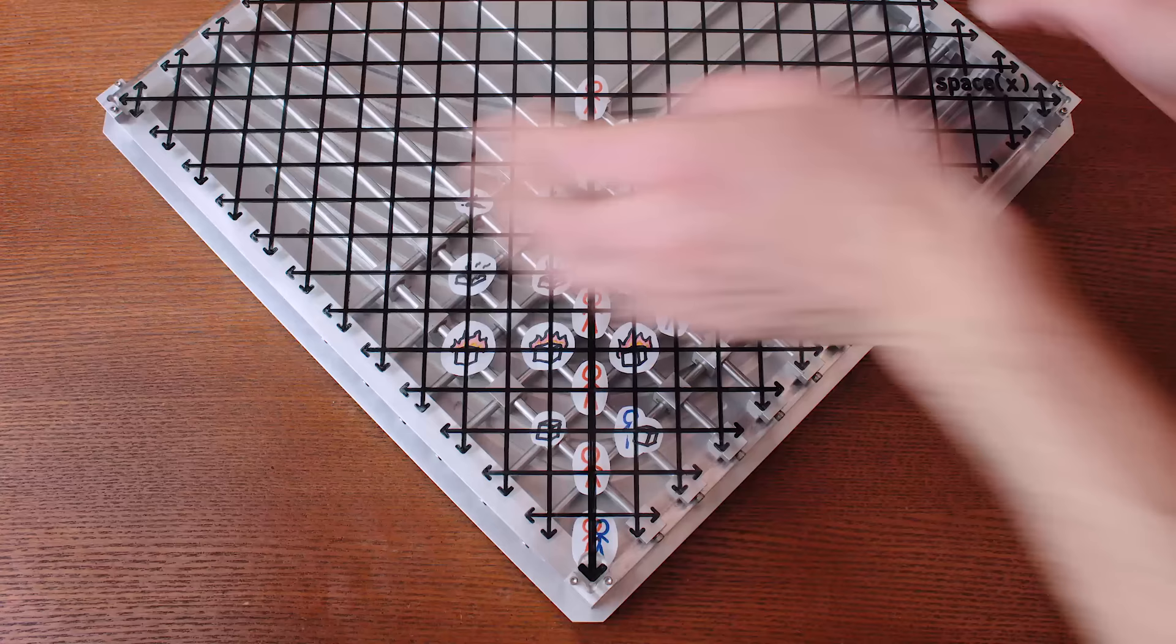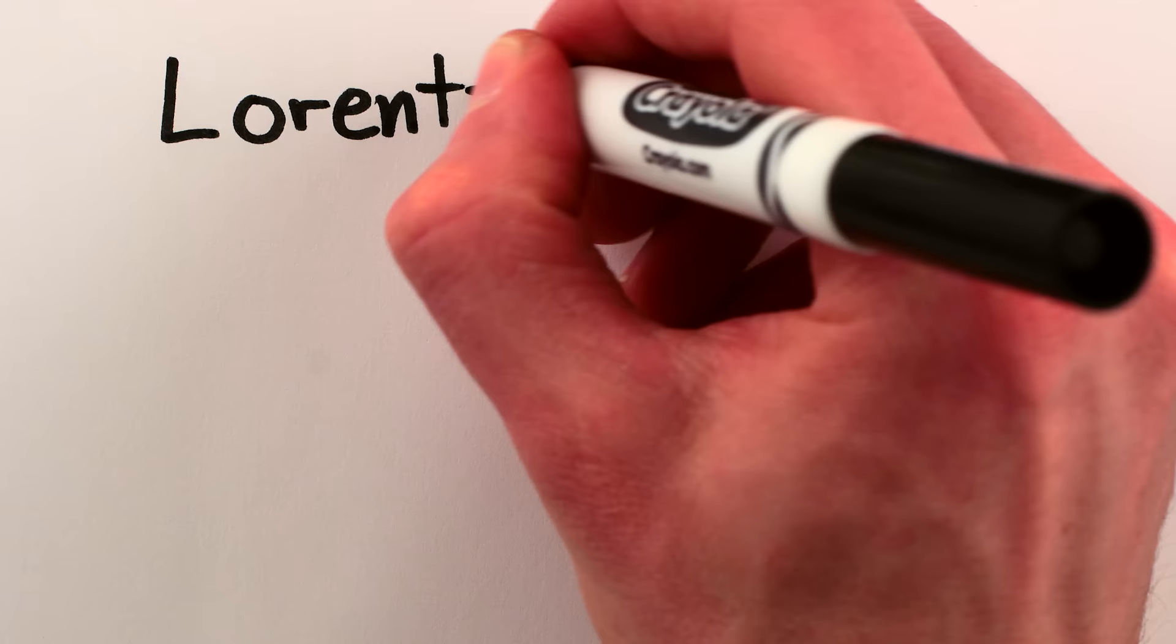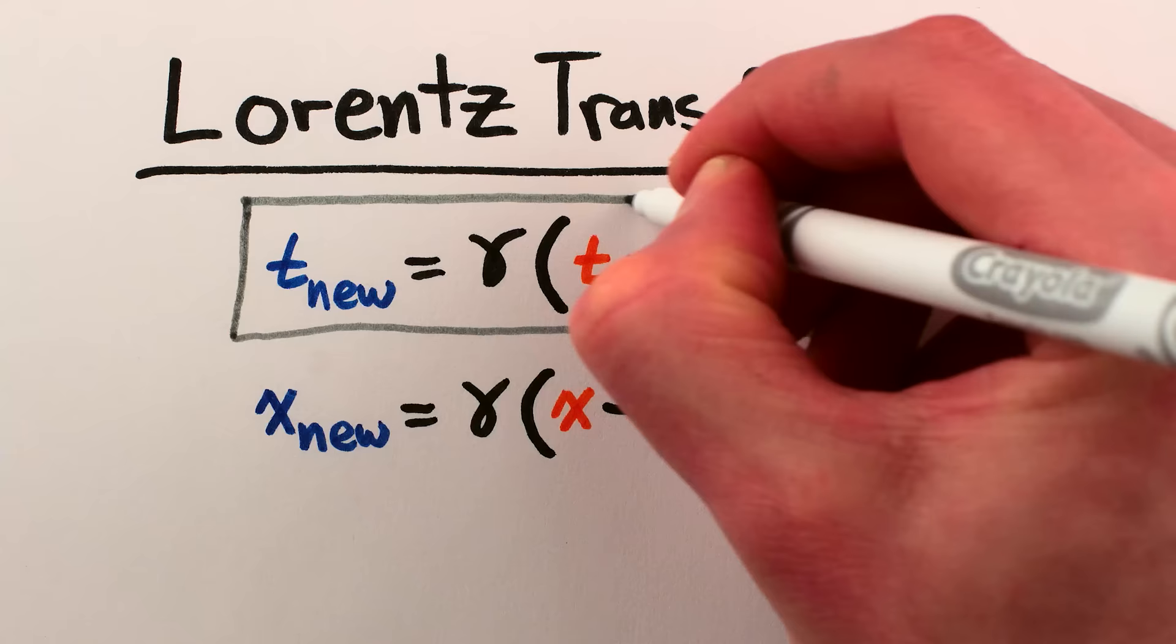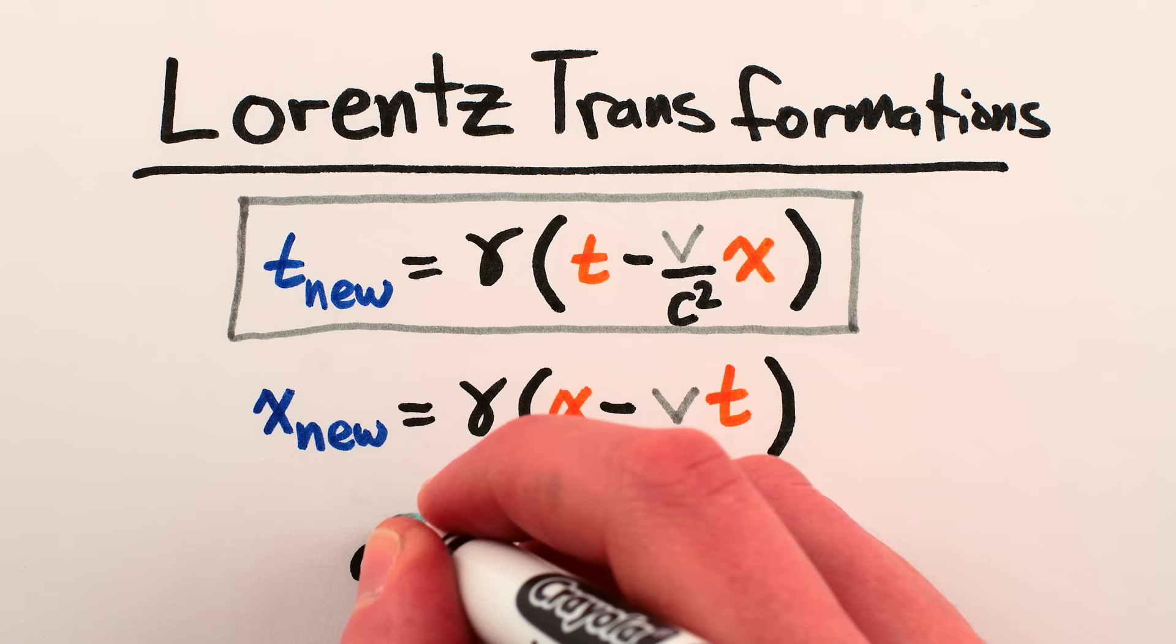A box even farther to the left that, from my perspective, simultaneously spontaneously combusts with the others will, from your moving perspective, be even farther out of sync with the box on the right. This is described by the time part of the Lorentz transformation equations, the part that says t new equals gamma times t minus v over c squared times x. Because of the x in there, the farther away an event is from you, the more its time from the new perspective will be out of sync with events closer to you.